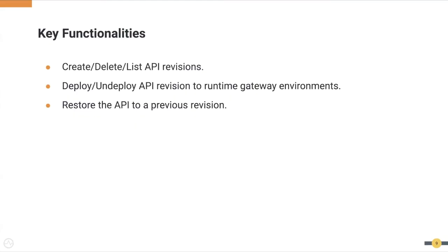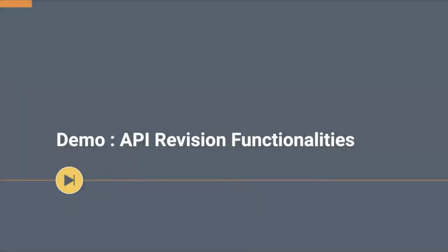Key functionalities of the API revision feature include the ability to create, delete, and list revisions. It also provides the ability to deploy or undeploy previously deployed revisions from the gateway environment, and provides capability to restore the API using a revision. Now let's see how we can do this in a real world scenario.